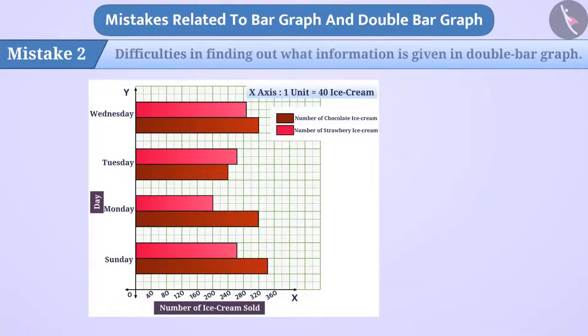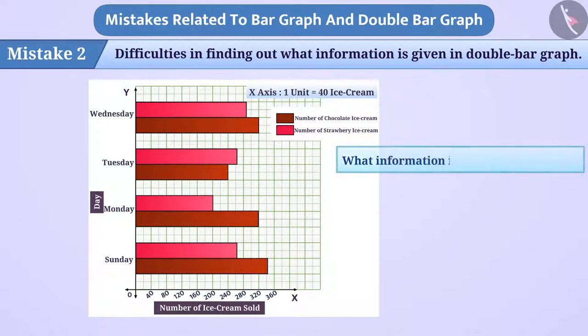Mistake 2: Some children have difficulties in finding out what information is given in the double bar graph. For example, if they are asked what information is shown in a double bar graph, then they are not able to answer it.